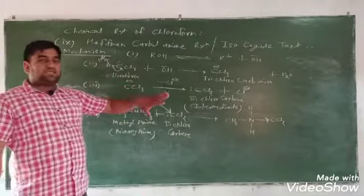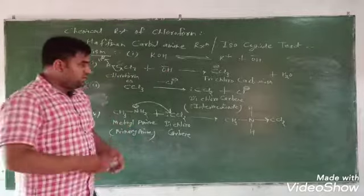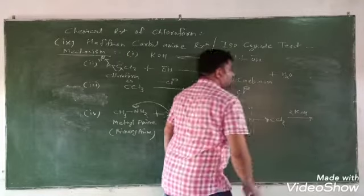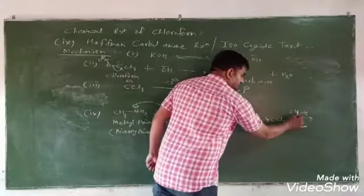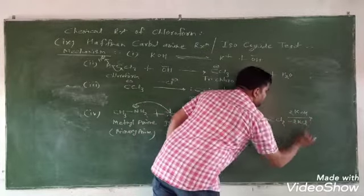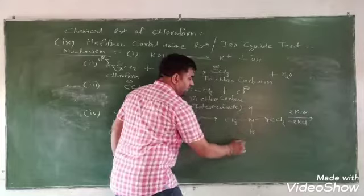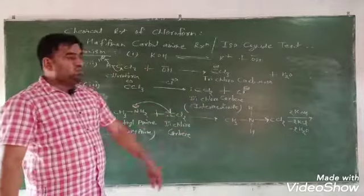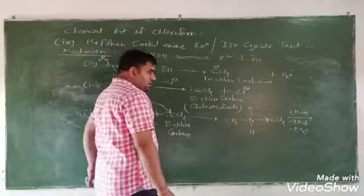There were 3 molecules of base in total. In the first step, 1 molecule was used. Now 2 molecules of base remain. These 2 molecules react: 2 potassium ions take 2 chlorine atoms (forming 2 KCl), and 2 hydroxide ions take 2 hydrogen atoms (forming 2 H2O). So 2 molecules of KCl and 2 molecules of water are released.